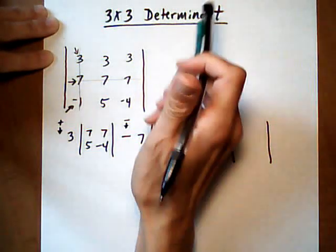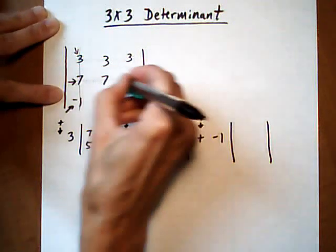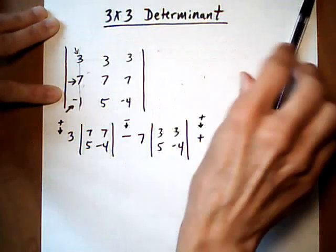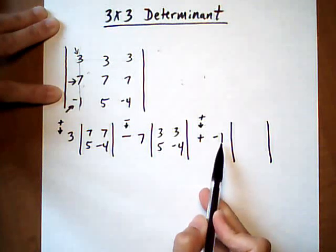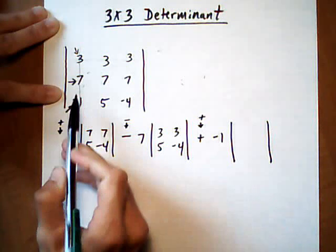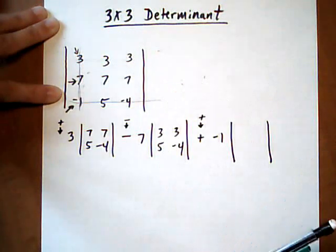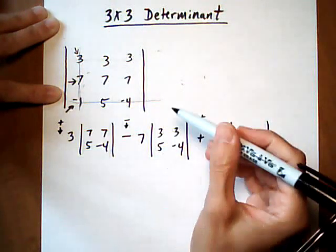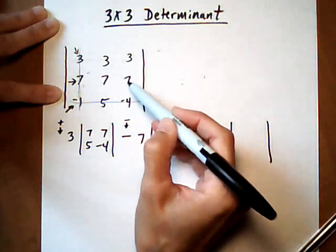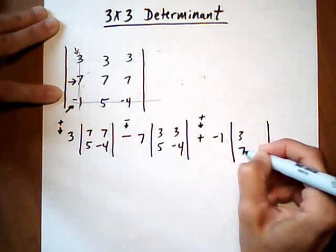And then we're going to do the same with the last one. Alright, so we're at the minus 1, which is this guy here. So we get rid of the column and the row of the minus 1, and we're left with 3, 3, 7, 7. So we put that in the last position.